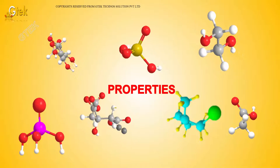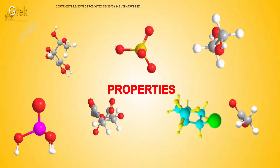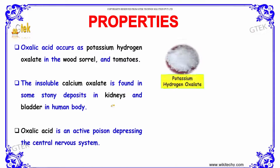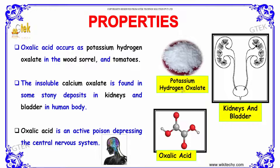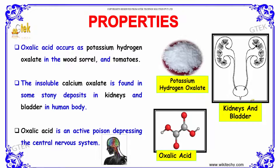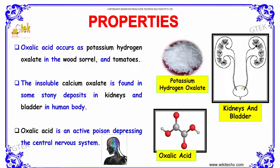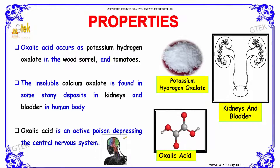Let us now discuss about the properties. Oxalic acid occurs as potassium hydrogen oxalate in the wood sorrel and tomatoes. The insoluble calcium oxalate is found in some stony deposits in kidneys and bladders in human bodies. Oxalic acid is an active poison depressing the central nervous system.